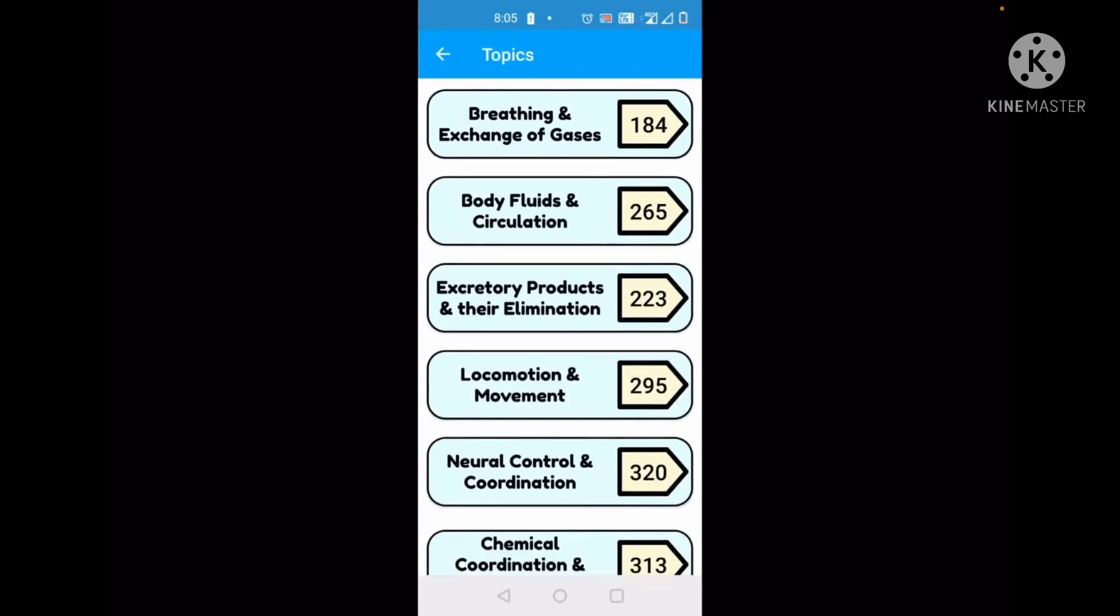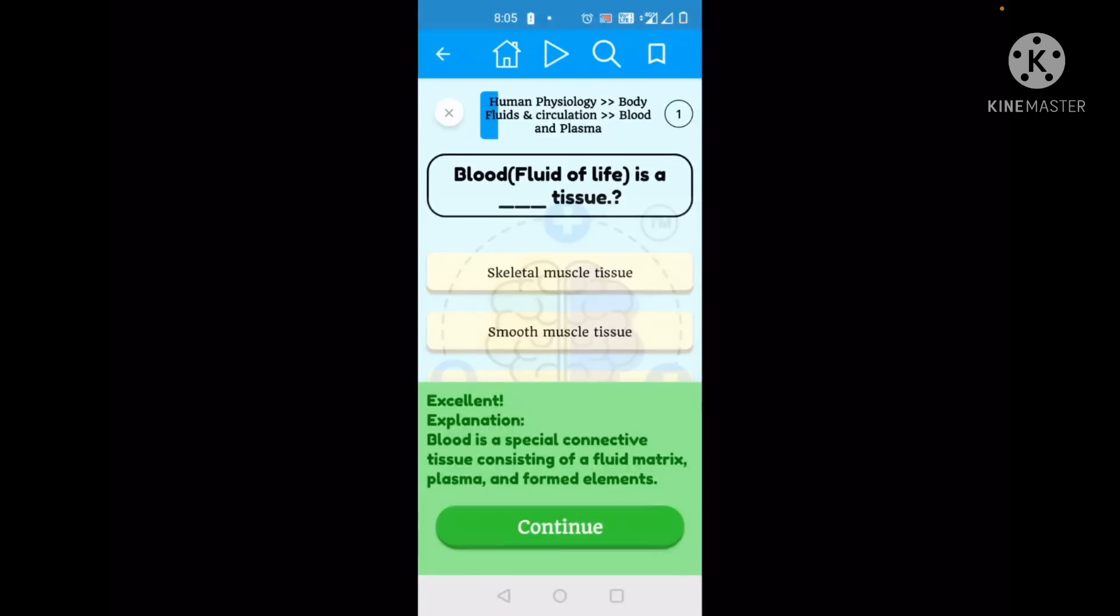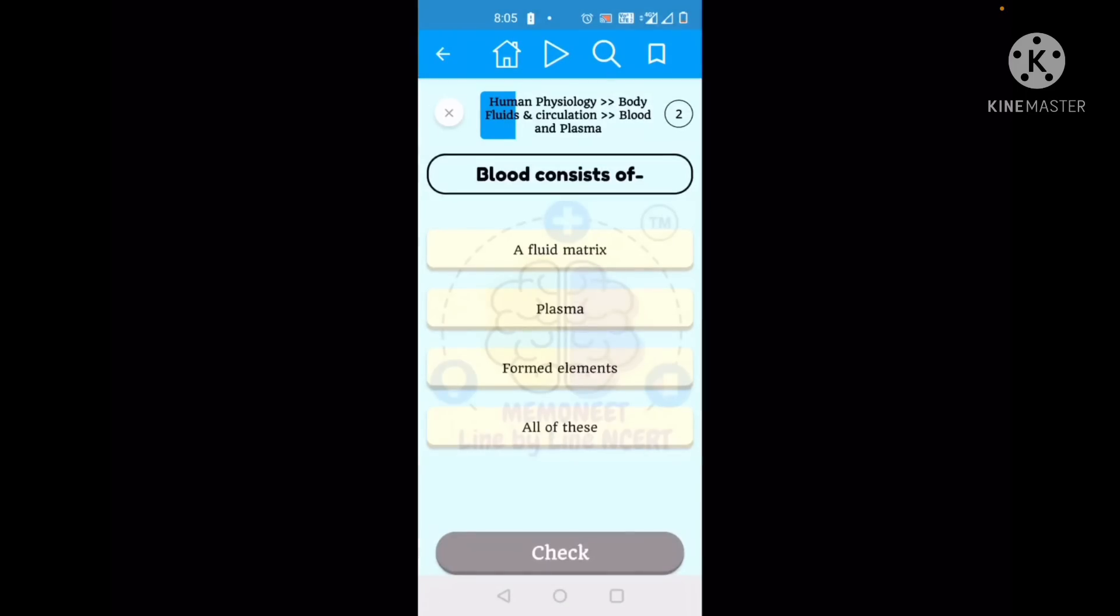Let's say I go to body fluids and circulation. And let's do blood and plasma. Blood is a skeletal muscle tissue, smooth muscle tissue, fat tissue, connective tissue. You realize if you actually do the chapter, the answer written here is it's a connective tissue. And then they will give you an explanation also that it's a special connective tissue consisting of fluid matrix, plasma, and formed element. That exact line of NCERT from where they have picked up the question. So this way, you can actually practice your NCERT and how much knowledge of your NCERT is there in the form of MCQs. So again, like I said, really good app. Recommended it for everyone. Thank you for listening.